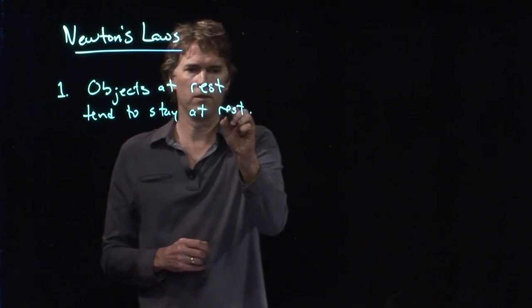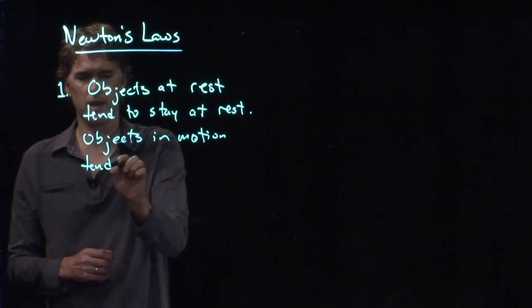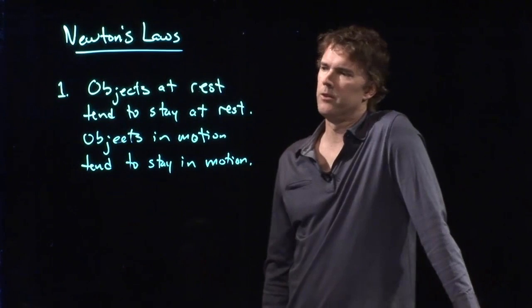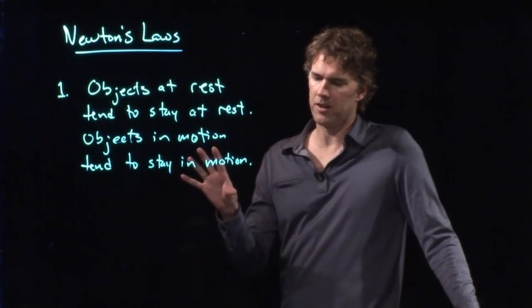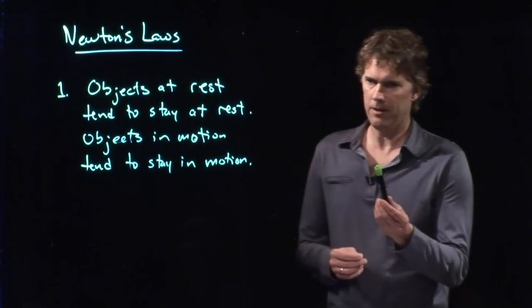Objects in motion tend to stay in motion. And this sounds rather intuitive now. But when Newton came up with these laws, they were rather counterintuitive. Objects at rest tend to stay at rest — here's a pen. I put the pen on the table; you can see the cap there. It's staying at rest. If I throw the pen, it's in motion — it's tending to stay in motion.